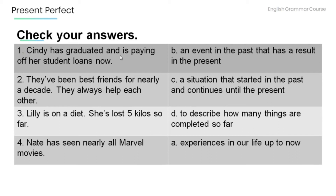Cindy has graduated and is paying off her student loans now — this is an event in the past that has a result in the present. They've been best friends for nearly a decade and always help each other — this is a situation that started in the past and continues until the present. Lily is on a diet and has lost 5 kilos so far — this describes how many things are completed so far. Nate has seen nearly all Marvel movies — this is an experience in our life up to now.